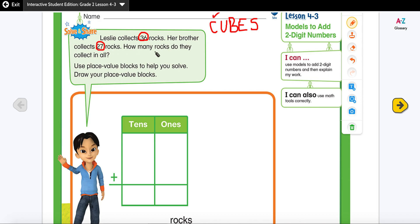How many rocks do they collect in all? U stands for underline the question. We're going to underline the question: how many rocks do they collect in all?